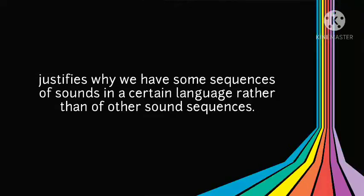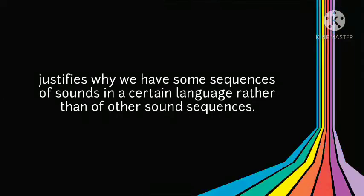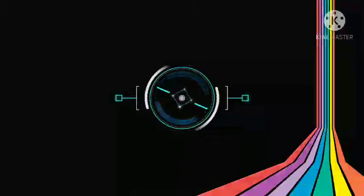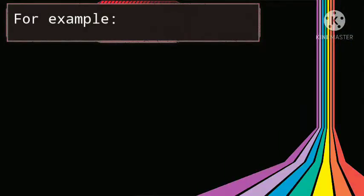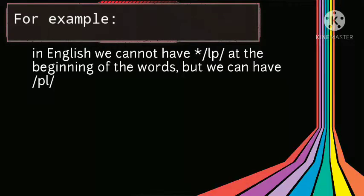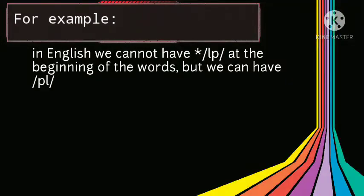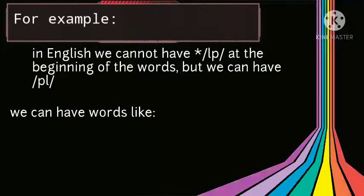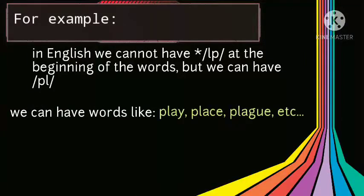This justifies why we have some sequences of sounds in a certain language rather than other sound sequences. For example, in English, we cannot have certain sound sequences at the beginning of words, but we can have words that begin with 'pl'. Therefore, we can have words like play, place, plague, etc.